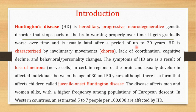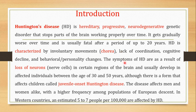HD is characterized by involuntary movements known as chorea, lack of coordination, cognitive decline, and changes in behavior or personality. I'll focus on symptoms in detail in the next video, but generally these are the symptoms of Huntington's disease. The symptoms of HD result from the loss of neurons — since this is a neurodegenerative disease, there is loss of neurons in certain regions of the brain. It usually develops in affected individuals between the ages of 30 and 50 years.